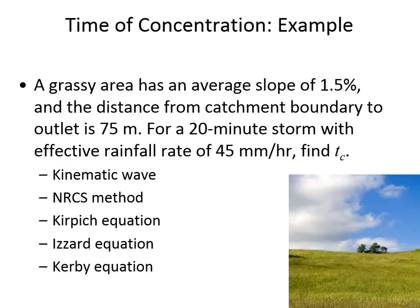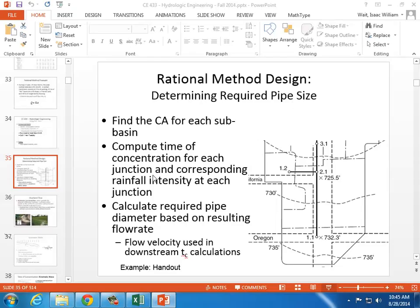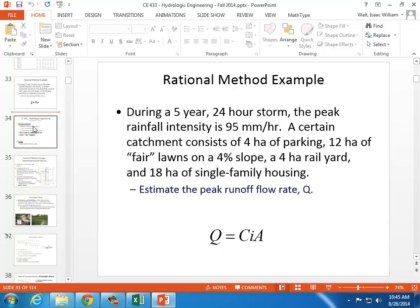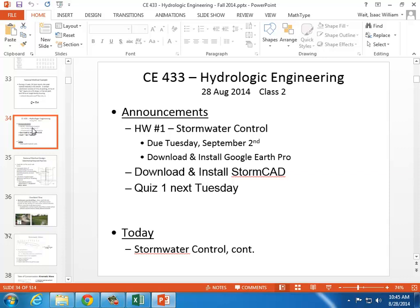We're out of time today. For comparison, the IZARD method gives a time of concentration of 38 minutes, and the Kerby method gives 18.8 minutes. The main point of this example is to illustrate the wide range of values you can get when estimating time of concentration using different methods. You've got a homework assignment due Tuesday — the majority of it is rational method design like we did in today's example. Also, have StormCAD installed on your computer for next Tuesday.